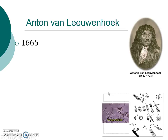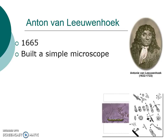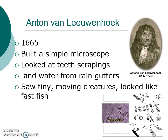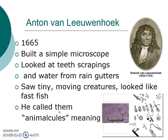A couple years after that, in 1665, there was a guy by the name of Anton van Leeuwenhoek. He built a very simple microscope and was able to look at teeth scrapings and water from rain gutters. When he looked at those under his microscope, he saw tiny moving creatures that looked like fast fish to him. You can kind of see this is what he drew out — some sketches of those, and this is what they would look like under a current microscope. He's looking at cells, and he called these things animacules, meaning little animals that he saw living in there.